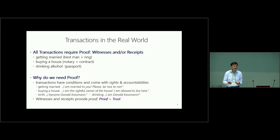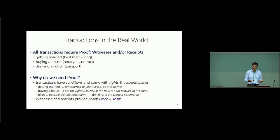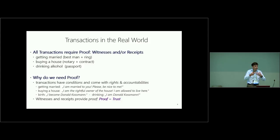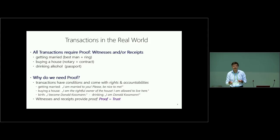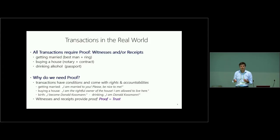Buying a house is also something where you want to have proof — you paid a lot of money and want proof you bought it. Why do we need proof in the real world for transactions? You need proof from previous transactions so you can fulfill the transaction. If I buy a house, I want to know the person selling it is the legitimate owner. If I get married, I want to make sure my wife isn't already married — that's why there's always the question, 'Is anybody against it?' These witnesses and receipts are the real-world concepts. Blockchain plays a role in implementing them.